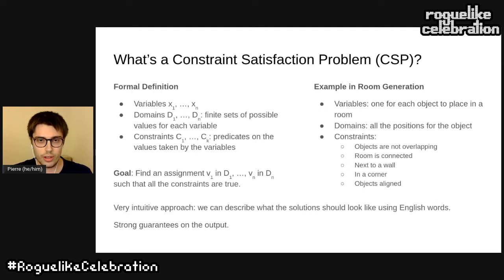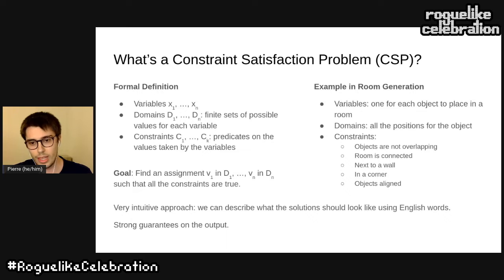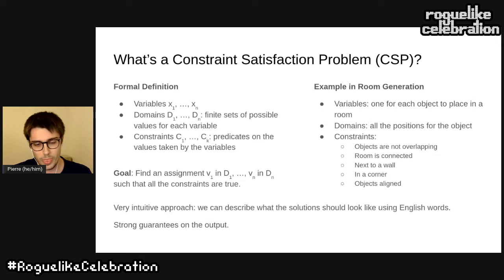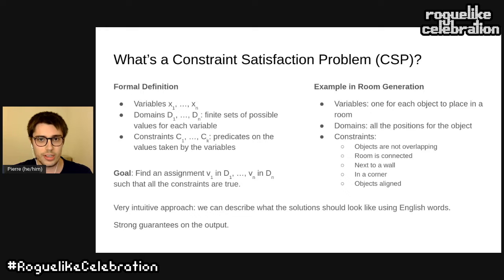Solving a CSP is just finding an assignment such that all the constraints are true. We can already notice two nice things: first, it's very intuitive — if we want a shower to be in a corner, we just add a constraint to do so. And we have very strong guarantees on the output, which is a very nice property in procedural generation.